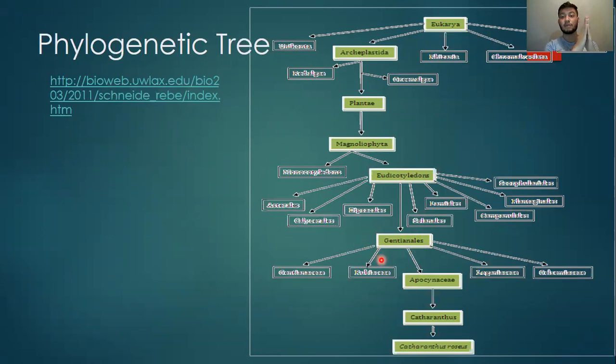This will branch out down into the Gentianales. As I previously mentioned, it's considered Gentianales because it has the different nodes from at least two or more leaves branching out from the nodes. And then it's going to come down into the Apocynaceae and down, as I previously mentioned, to the Catharanthus and the Catharanthus roseus.